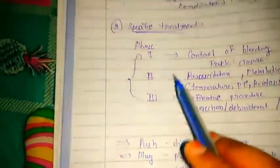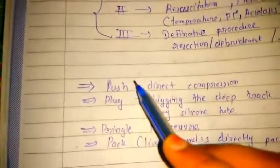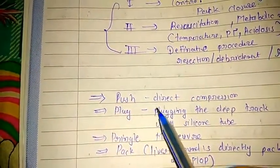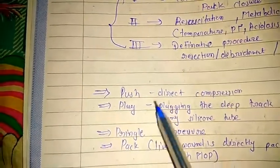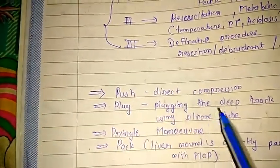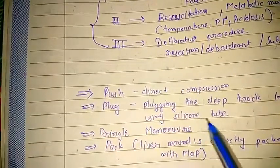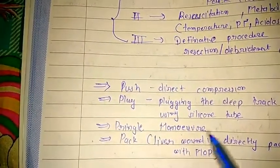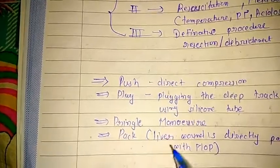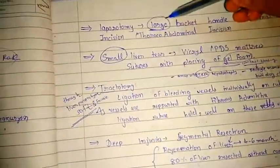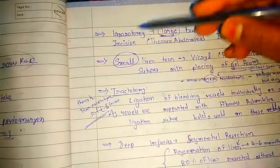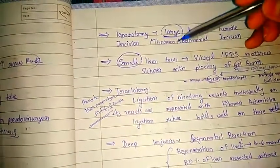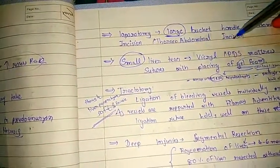In specific treatment: first, push by direct compression. We can use plugging of deep track injuries using a silicone tube. The other method is the Pringle manoeuvre to control bleeding. Then pack — the liver wound is directly packed with a mop. For large injuries, a large bucket-handle abdominal incision at laparotomy or thoracoabdominal incision is used.